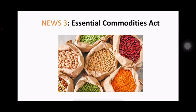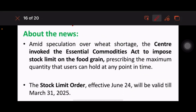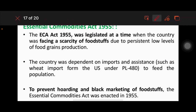Next is the Essential Commodity Act, which comes under GS3 Economy. The centre has invoked the Essential Commodity Act to impose stock limits on foodstuffs. The stock limit order will be valid till March 2025. The Essential Commodity Act 1955 was enacted at a time when the country was facing a scarcity of foodstuffs and was dependent on imports to feed its population, and to prevent hoarding and black marketing of foodstuffs.